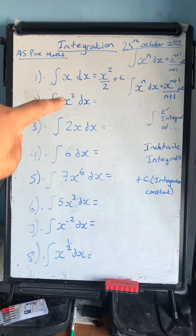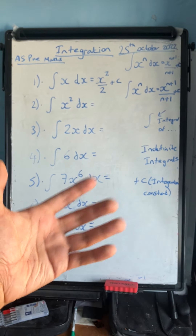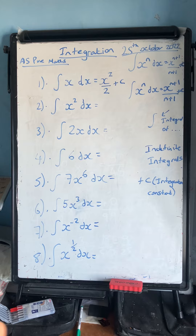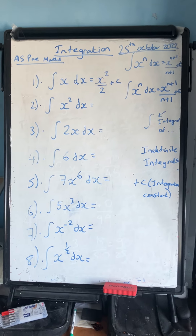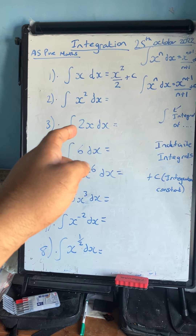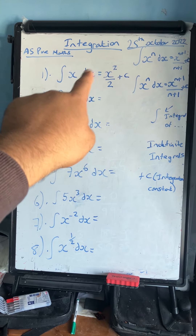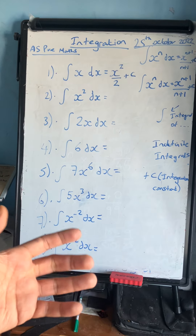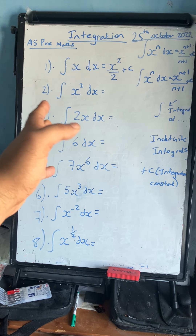Looking at notation: the elongated S symbol means the integral of a function. So the integral of f(x), g(x), p(x), q(x) with respect to x — dx just means 'with respect to x'. Most A-level textbooks use the letter x, but you can have other letters, such as the integral of y dy. Make sure you are integrating with respect to that letter.